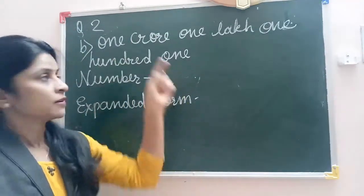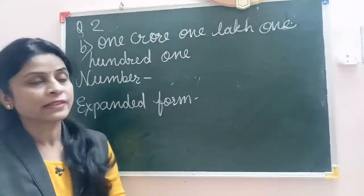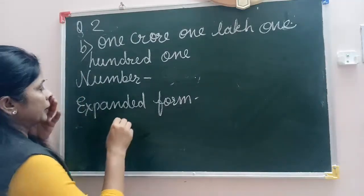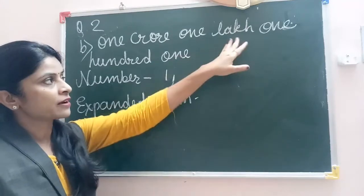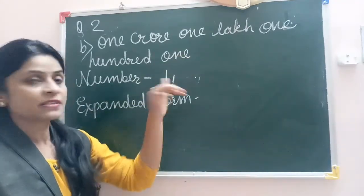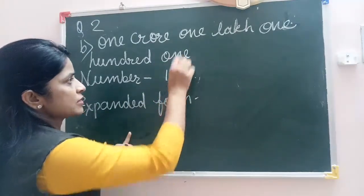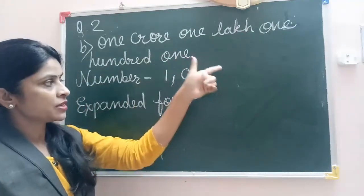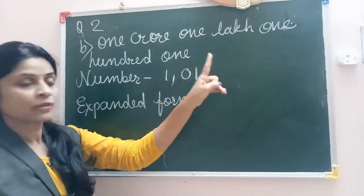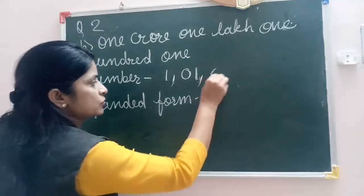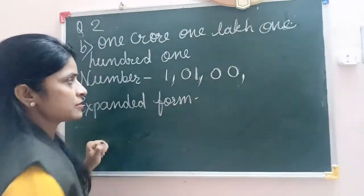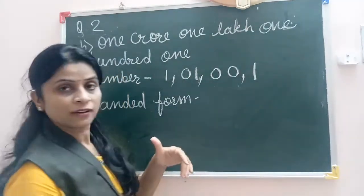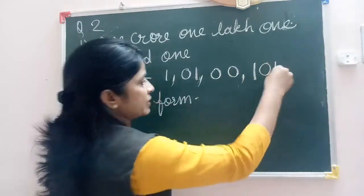What is the solution for B1? The number name is 1 crore, 1 lakh, 101. So we will write the number: 1 crore. The 10 lakh place is not given, so we will put 0. And 1 lakh. The 10,000 and 1,000 places are not given, so we will put 0 for those places. 100, then the 10s place is not given, so we put 0. And 1.